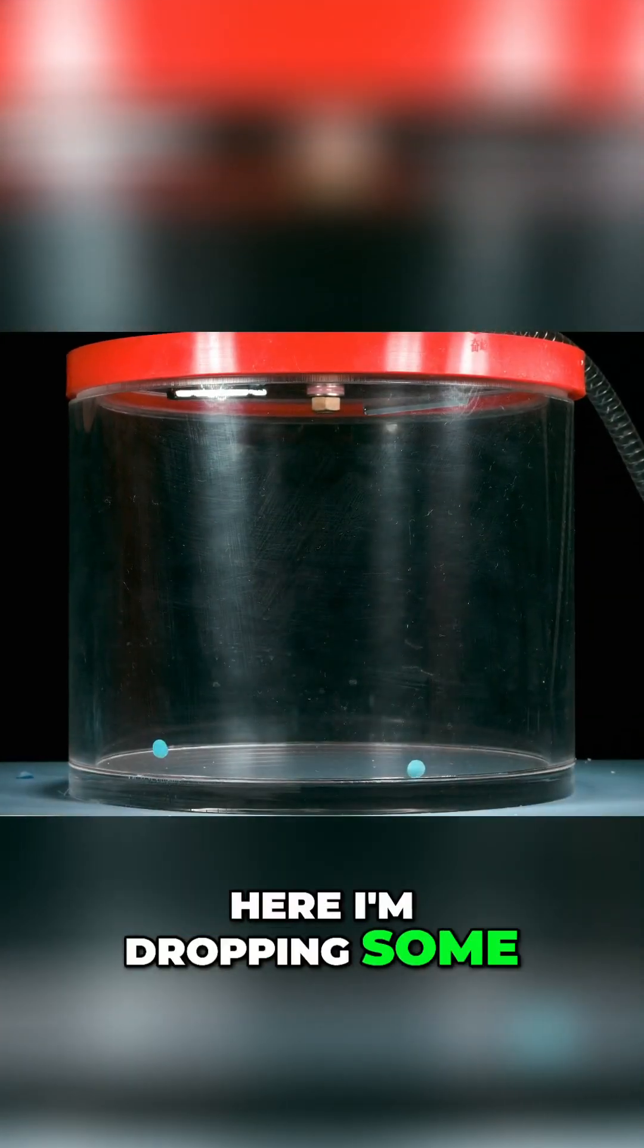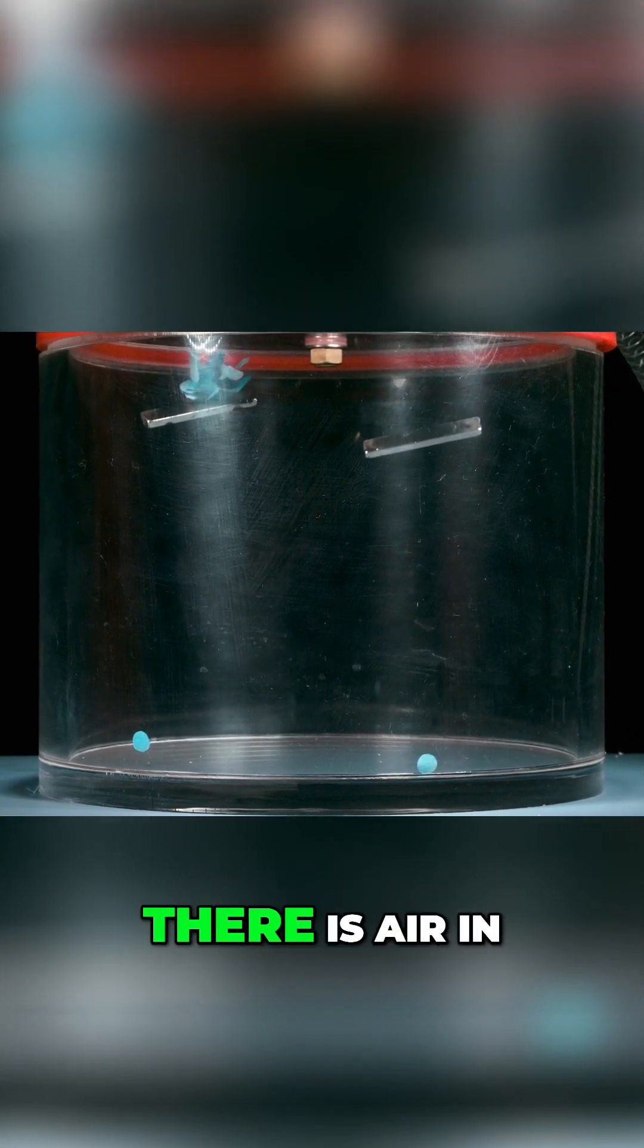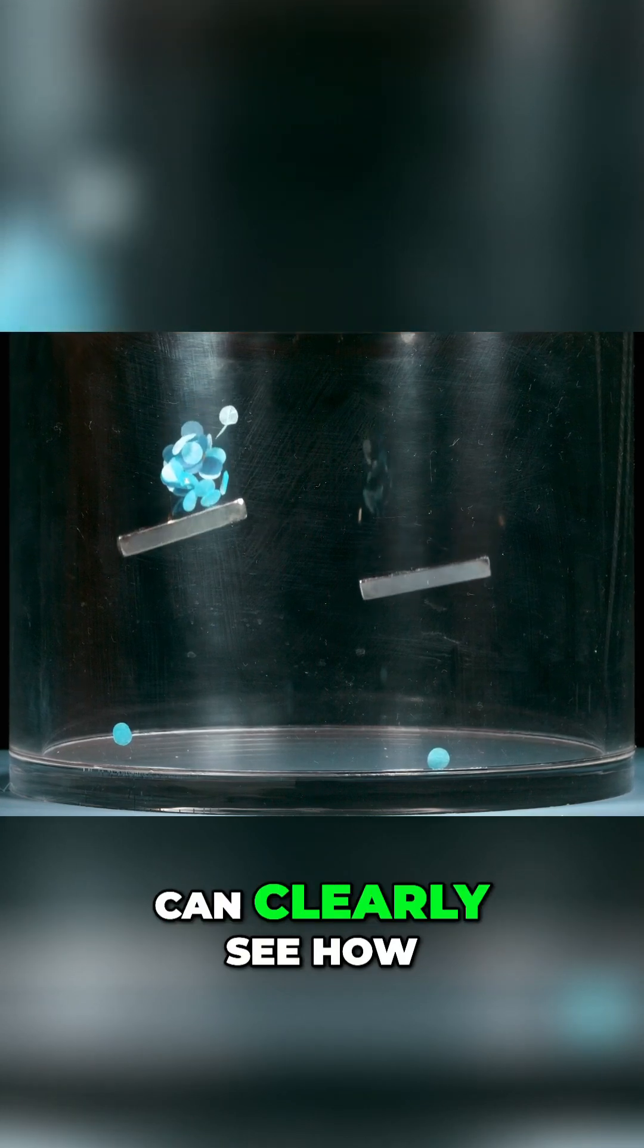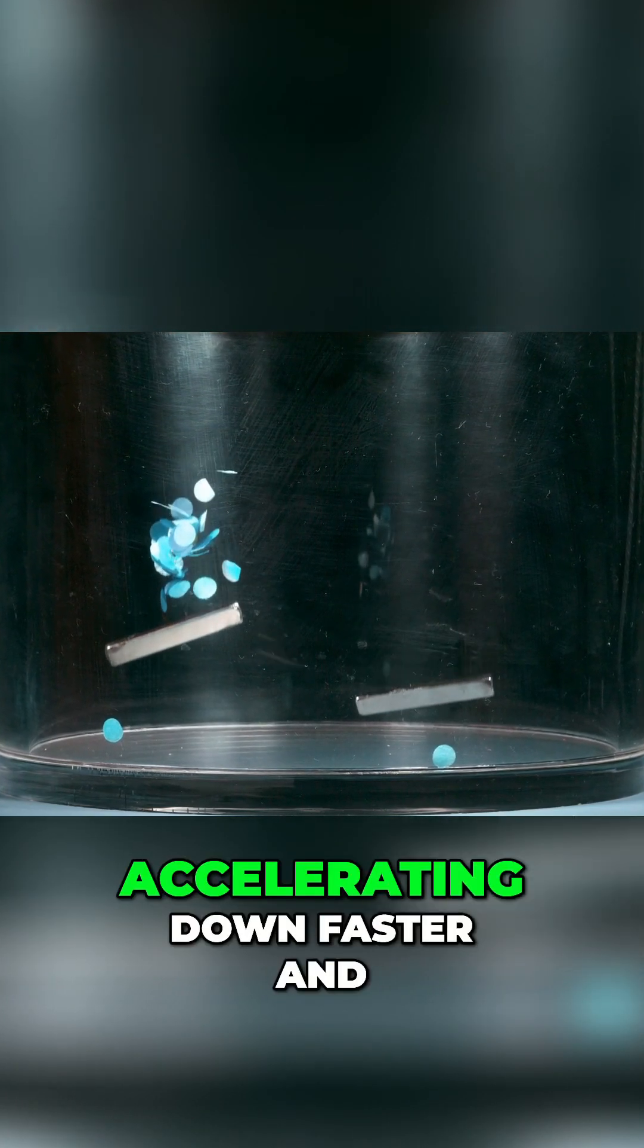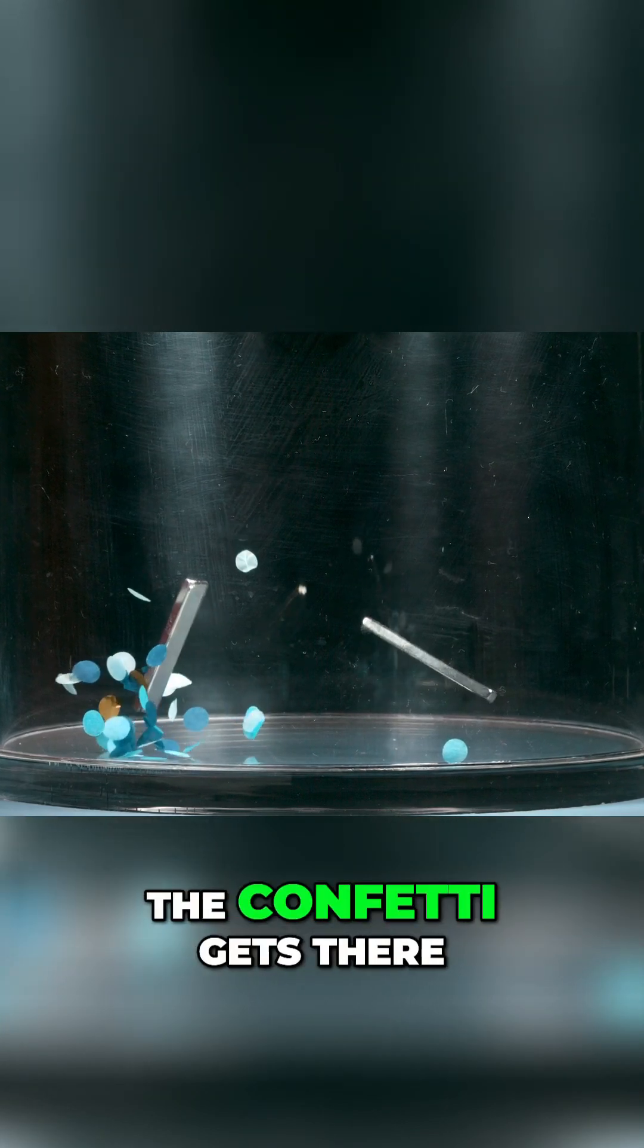Here, I'm dropping some paper confetti along with some magnets, and in this case, there is air in the chamber. I'm doing it as a control, so you can clearly see how the magnet is accelerating down faster and slamming into the ground before the bulk of the confetti gets there.